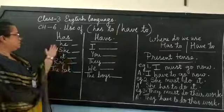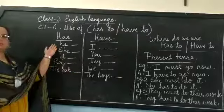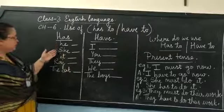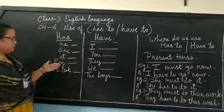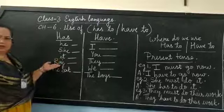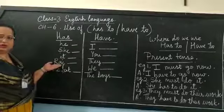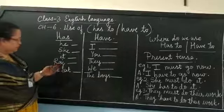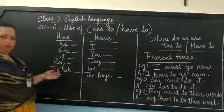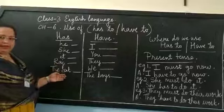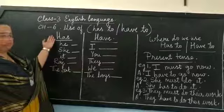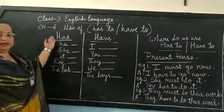Sentences that begin with he, she, it, any kind of a name — Raj, Anu, Priya, or the cat — we will be using has.